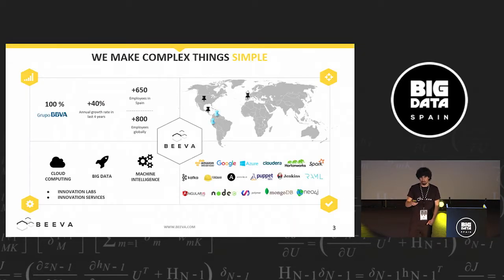I'll briefly introduce Viva. It's an IT company from the BBVA group. We are more than 600 employees, growing a lot and expanding to Latin America. We are focused on innovation, especially in fields of cloud computing, big data, or machine intelligence solutions. We have very big technological partners like AWS, Google Cloud Platform, Microsoft Azure, and we work with technologies like Spark, Kafka, DevOps technology, Ansible, et cetera.